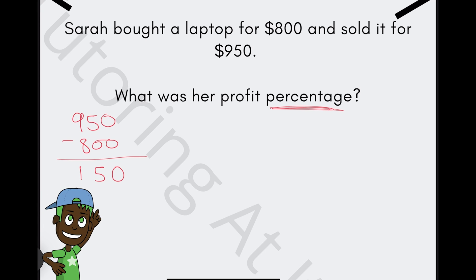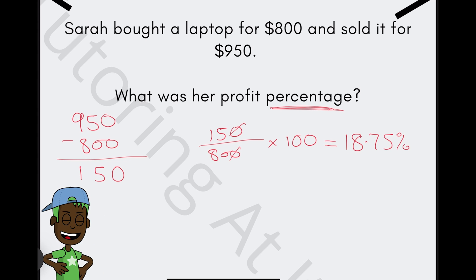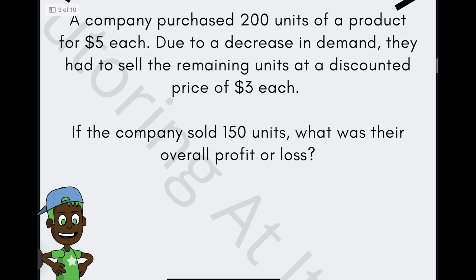So in order to calculate the profit percentage, you always have your profit divided by the cost price, which means $150 divided by $800 times by 100. Once calculated, which you could simplify as 15 over 80 times 100, would give you 18.75%. So Sarah's profit percentage was approximately this value. Marvelous work. Let's keep it up.